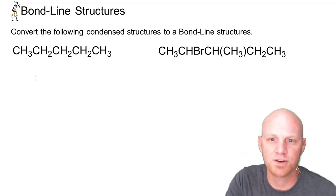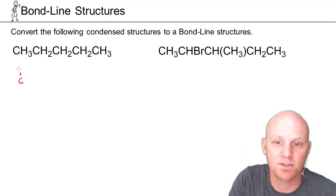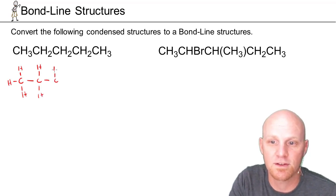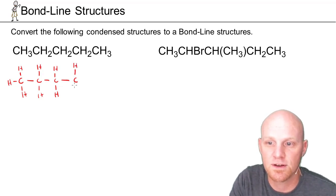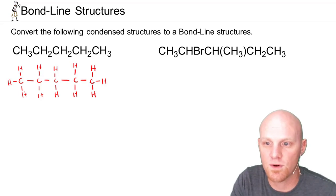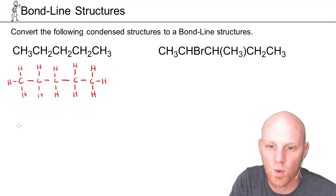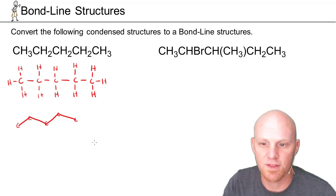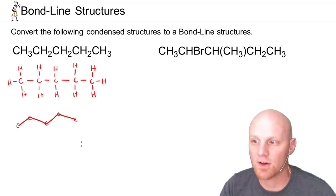So we want to turn these condensed structures into bond line structures. I'd recommend first turning them into a Lewis structure. In this case, we've got a carbon bonded to three hydrogens, bonded to another carbon with two hydrogens, bonded to another carbon with two hydrogens, bonded to another carbon with two hydrogens, and finally bonded to another carbon with three hydrogens. To make a proper bond line structure, we've got five carbons in a row, so we zig and zag for five carbons — those all represent carbons. We obviously wouldn't draw the C's in, but that is the bond line structure for this simple alkane.